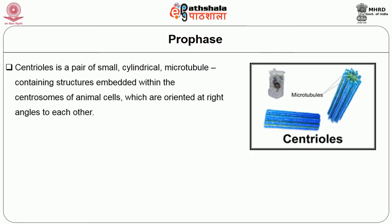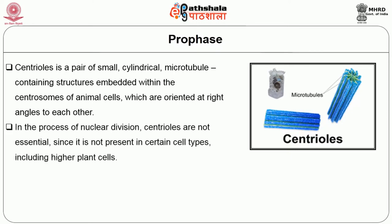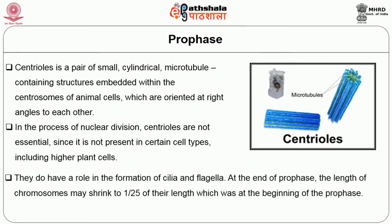Centrioles are a pair of small cylindrical microtubule-containing structures embedded within the centrosomes of animal cells, oriented at right angles to each other. In nuclear division, centrioles are not essential since they are absent in certain cell types including higher plant cells. However, they do have a role in the formation of cilia and flagella. By the end of prophase, the length of chromosomes may shrink to 1/25 of their length at the beginning of prophase.